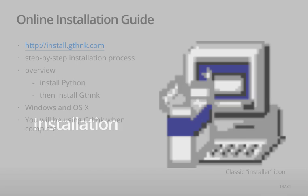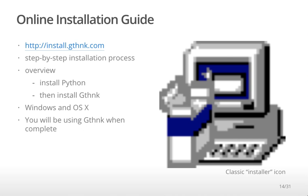Installation. We want it to be as simple as possible to install GThink. Start by going to our installation guide at install.gthink.com. This is a step-by-step installation process that covers installing Python and installing GThink. The installation process supports Windows and OS X. It should only take a few minutes, and when you're done, you will be using GThink.